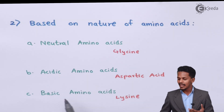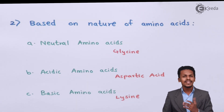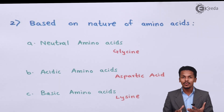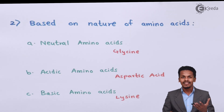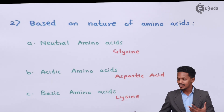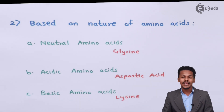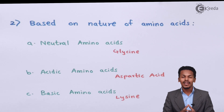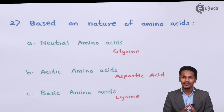Talking about the next one — basic amino acids. These are amino acids which have more NH2 groups compared to carboxylic groups, and that's the reason they are called basic amino acids. For example, lysine. So this is what we discussed about the classification of alpha amino acids based on their nature and their function.